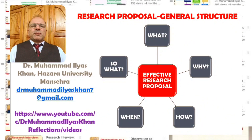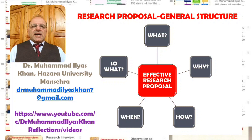The general research proposal structure revolves around five main questions: what the research is about, why the research is being done, how the research will be conducted, when — meaning the timeline or schedule of the various steps of the research — and lastly, the 'so what,' which refers to the possible outcomes or results of the research process.